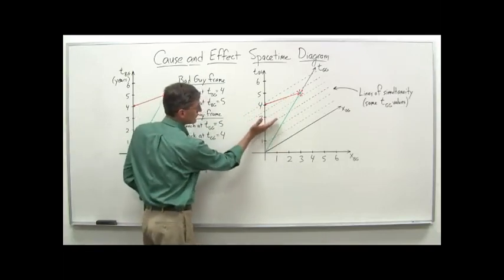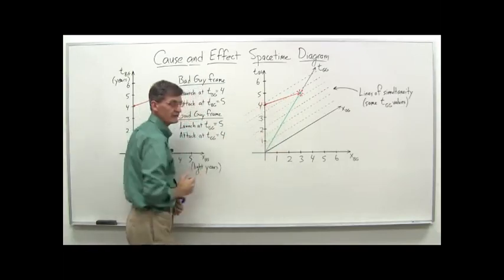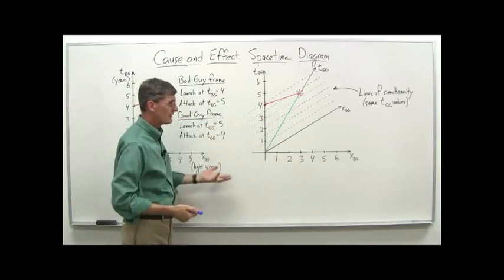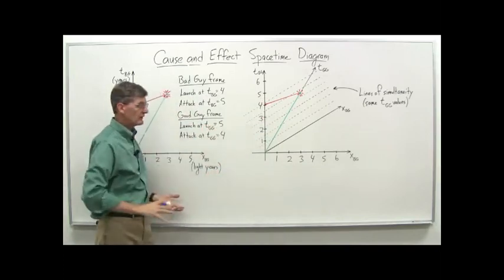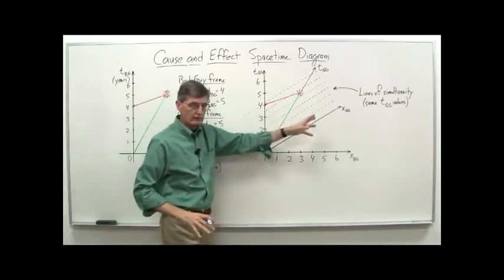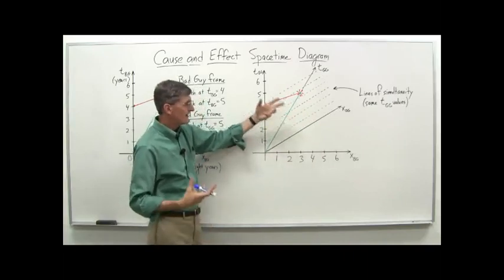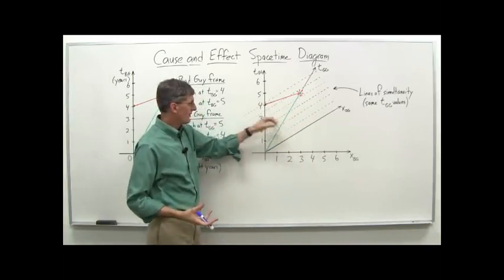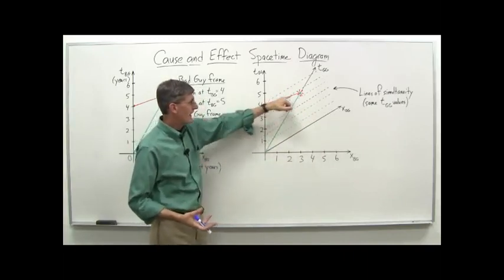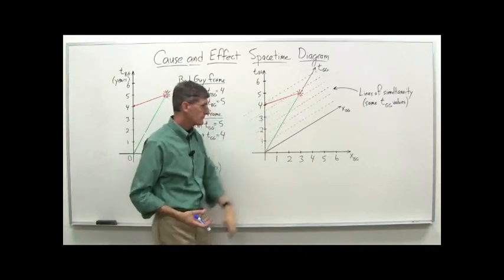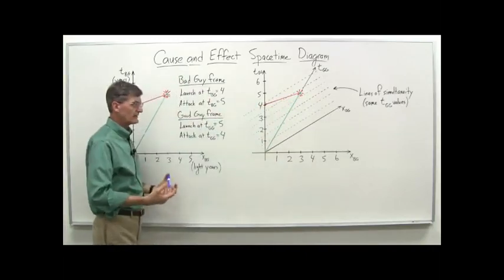It's 1, 2, 3, 4, 5, and almost 6 there. So clearly from the diagram, without even doing any calculations, as long as we get our axes drawn correctly, we can see that in the good guys frame of reference, the launch occurs after the attack. And, in fact, in a sense, the good guys would see the attack occurring here, assuming they're still around.